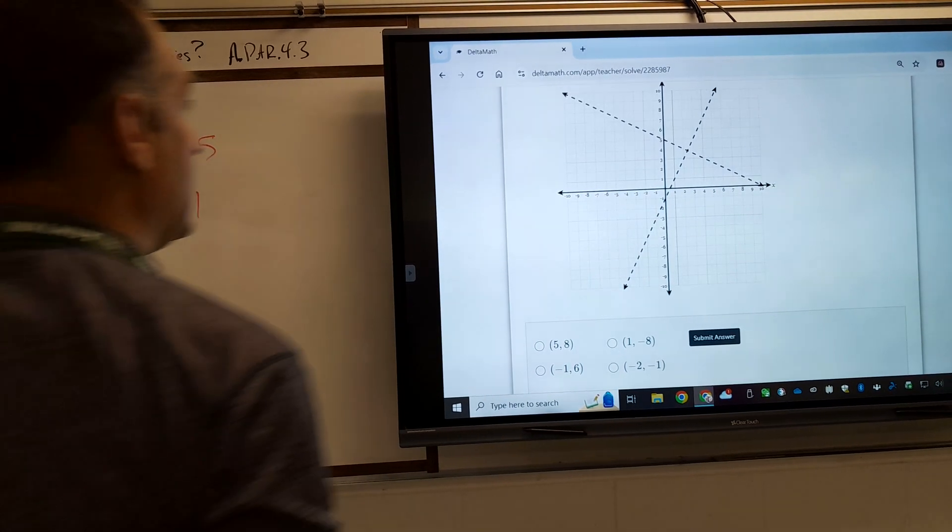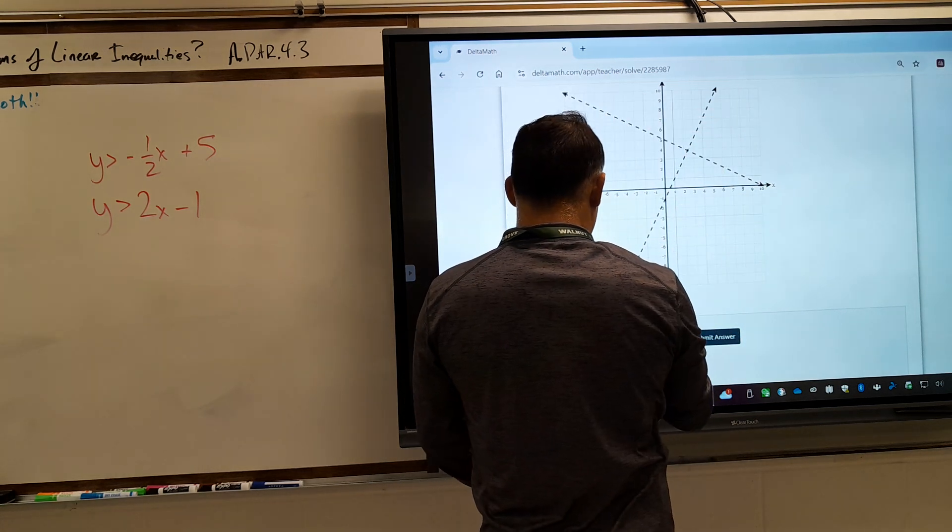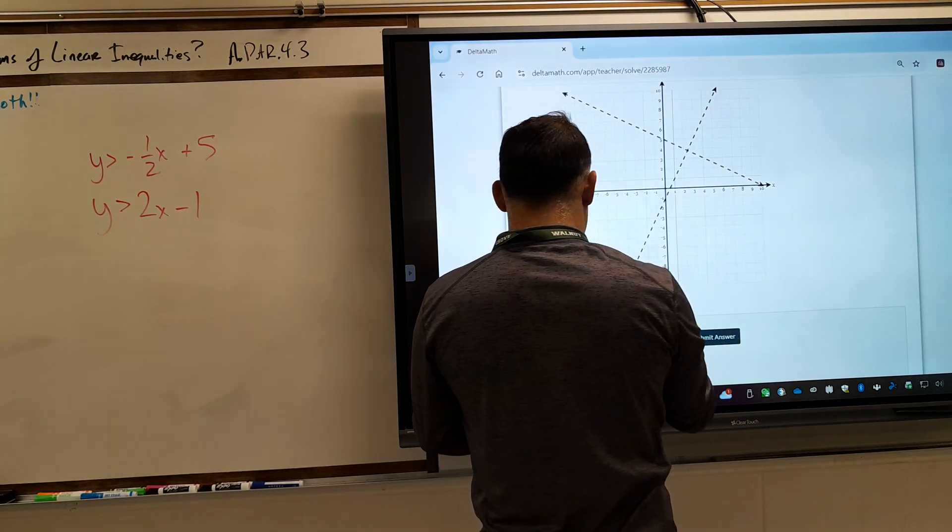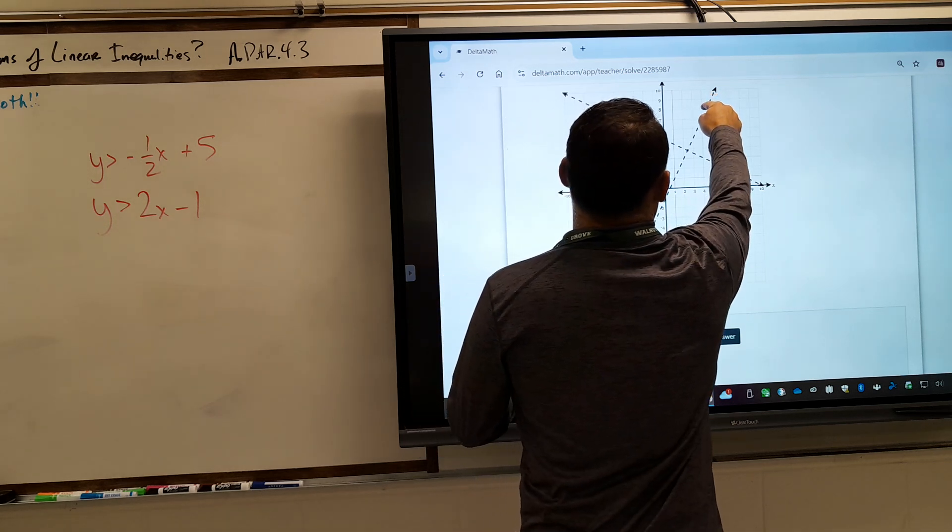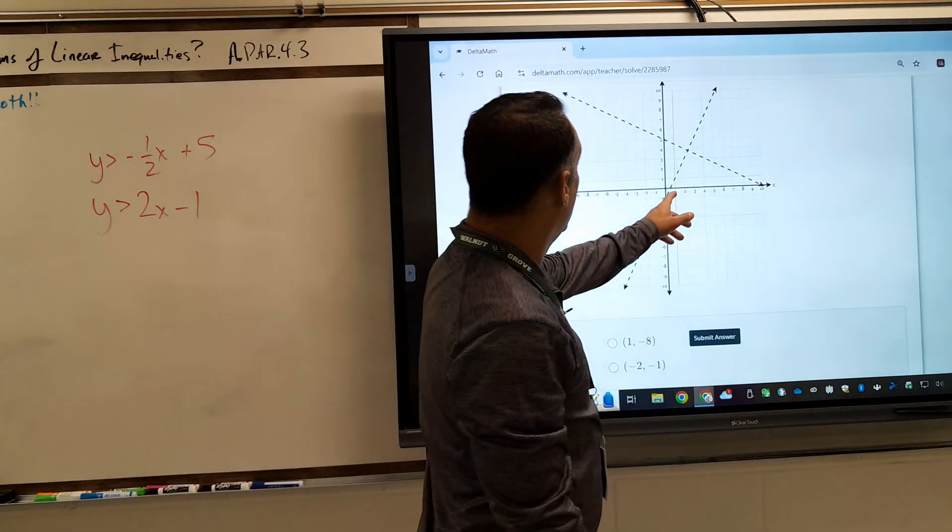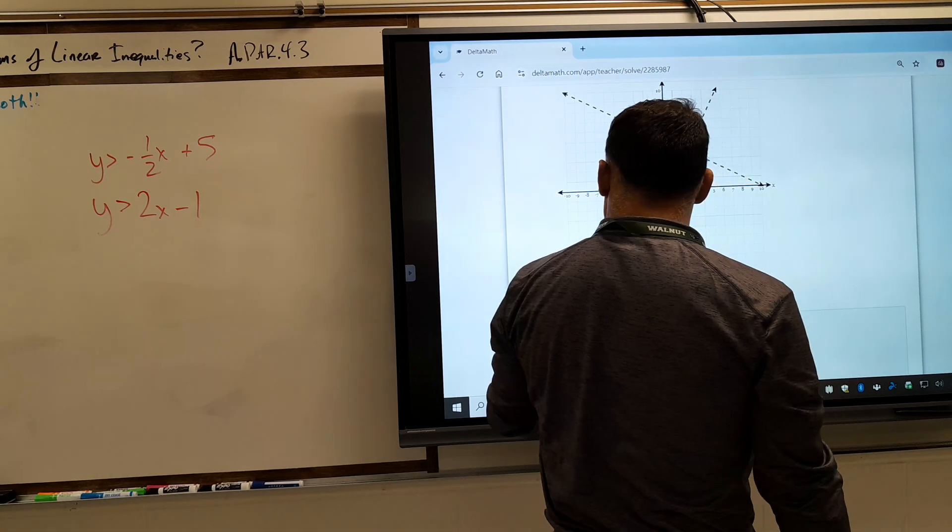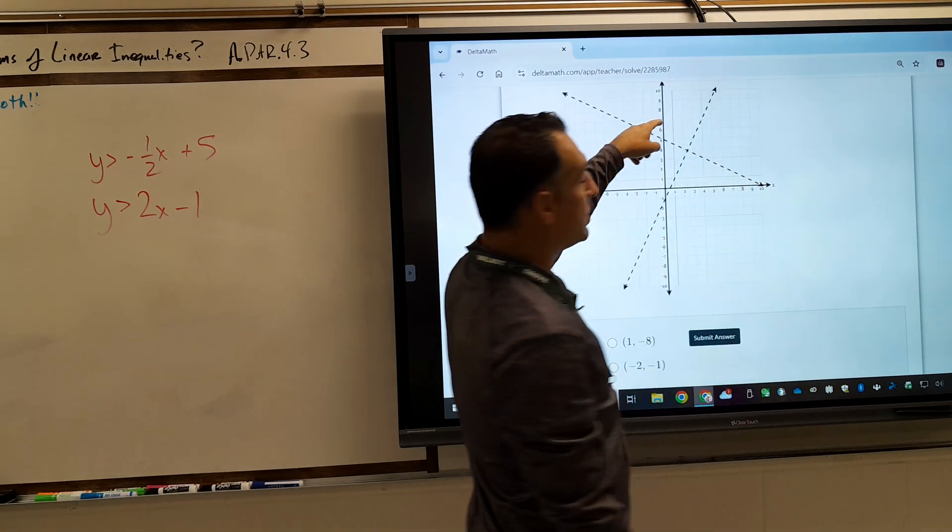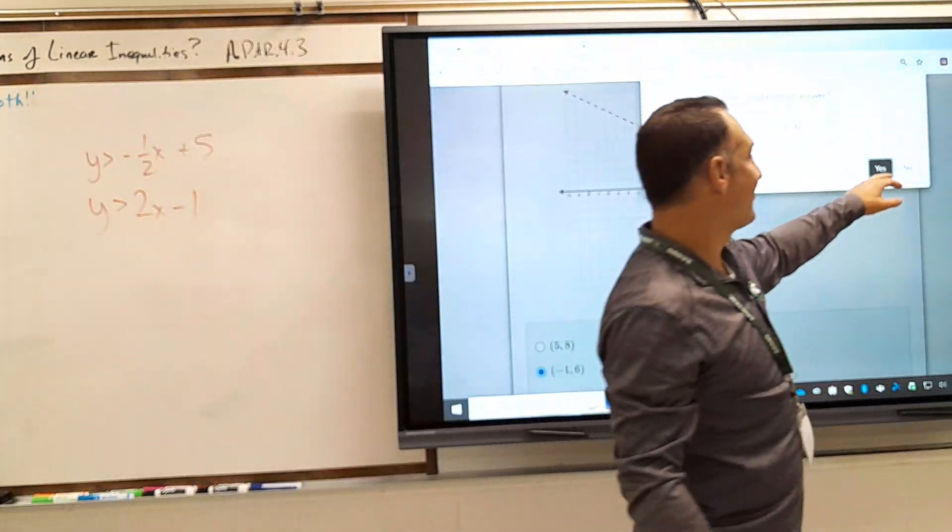Right now, everybody's writing down the answer that they think is the correct one in that solution set, and then they're going to compare with their neighbors in a moment. It needs to be in this region. So, 1 negative 8 is down here. The negative is 5, 8? No, it's right there. I think it's 5, 8. No, it's not 5, 8. It's a little bit out. All right, how about negative 1, 6? Yeah, that works.